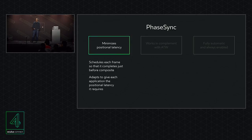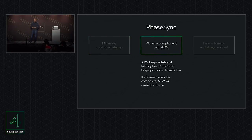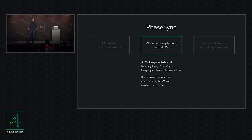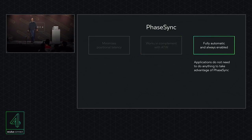FaceSync acts to minimize positional latency. It does that by scheduling the start of CPU work for each frame so that the GPU finishes just before composite, and it does this adaptively so each application is given just the amount of positional latency it needs. It's been in our system since we introduced ATW and works in complement with ATW: ATW keeps rotational latency low, FaceSync keeps positional latency low. It's also fully automatic and always enabled — there's nothing you need to do, you've been using it all this time.